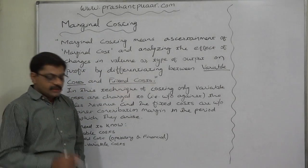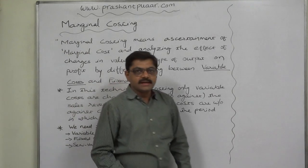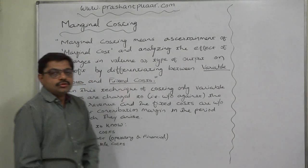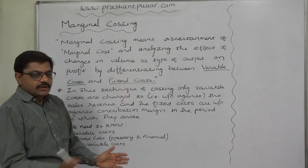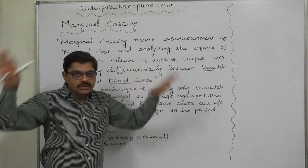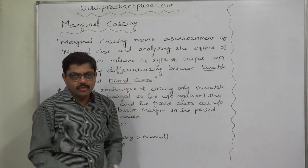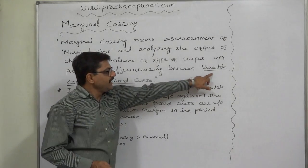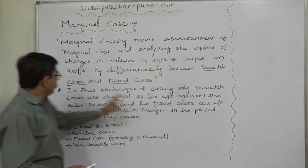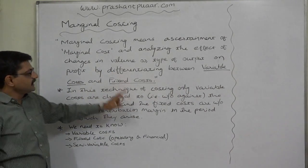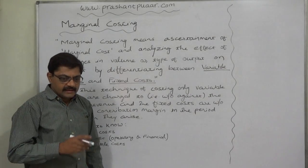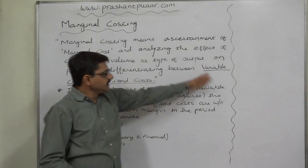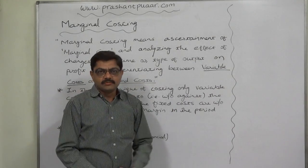The most important task in marginal costing is to differentiate or segregate the total cost of production and sales into two main parts: one is variable cost and another is fixed cost. In the coming lectures we are going to analyze all these terms separately.